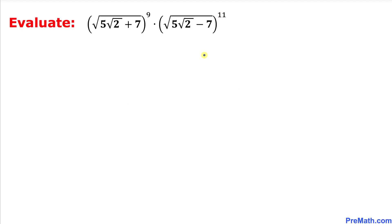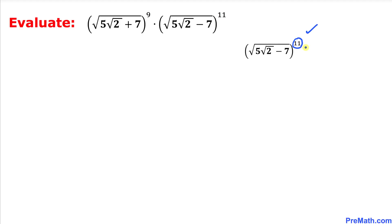Let's go ahead and get started with the solution. Let's focus on the second part of this problem. I can tweak the exponent 11 by writing it as 9 plus 2. So I can write this as square root of 5 times square root of 2 minus 7, whole power 9 plus 2.